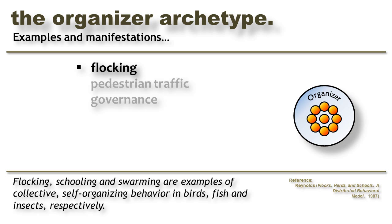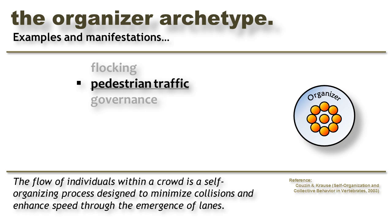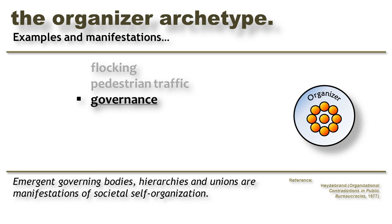Organizer behavior is exhibited in the following examples. Flocking — flocks of birds, schools of fish, and swarms of insects are all examples of self-organizing systems. Here the animals move in a rapidly changing configuration without a centralized decision maker, circumventing and flowing around obstacles as they travel toward their objective. Pedestrian traffic is another example of Organizer behavior. When observed externally, the individuals moving through a crowd group themselves into patterns and flows that minimize collisions and support the emergence of lanes — all happening organically with little or no communication between the participants. Finally, governance is an example of Organizer behavior: most forms of government originate as self-organized efforts to manage the affairs of the collective, and transformations between government types, both violent and peaceful, are also manifestations of Organizer behavior.